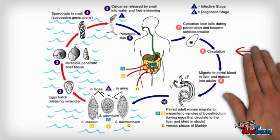The schistosomula travels through venous circulation to the heart and lungs, then migrates into the portal system to the liver where it matures into adults in about three weeks. They then reach the mesentery or bladder vessels where they live and ovulate for the duration of the host's life. The eggs pass through the vessel wall into the intestine or bladder and are excreted in feces or urine.